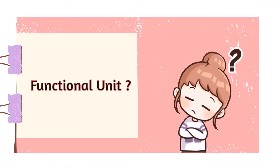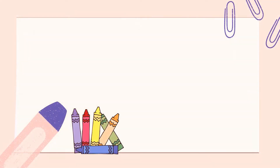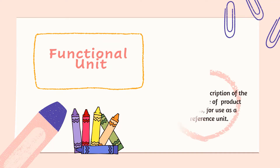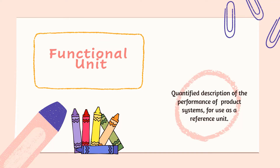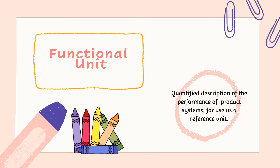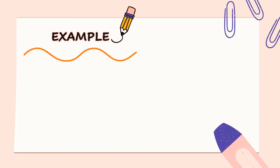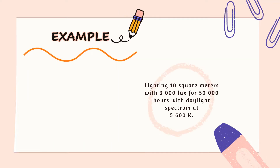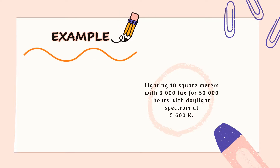Did you know what a functional unit is? The functional unit is a quantified description of the performance of product systems, for use as a reference unit. For example, lighting 10 square meters with 3,000 lux for 50,000 hours with daylight spectrum at 5,600K.